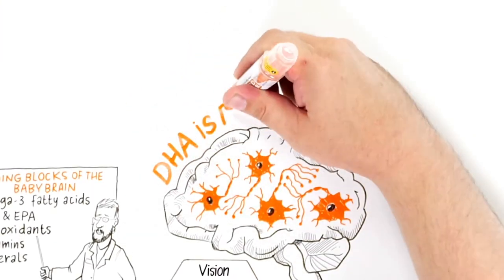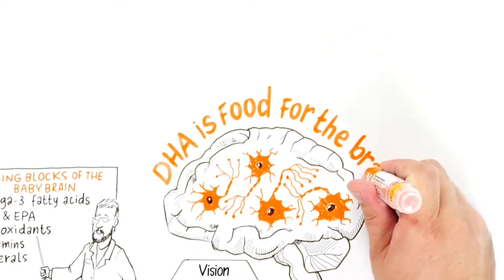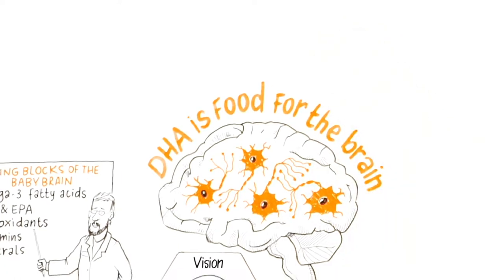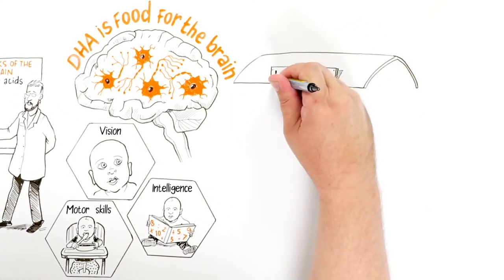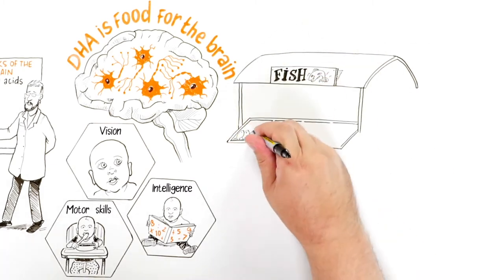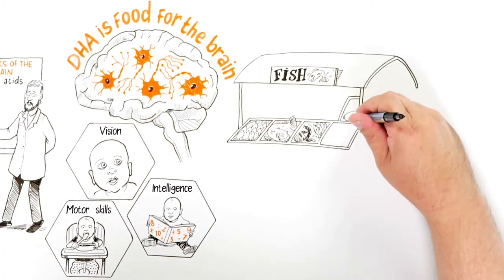So, it is important that you get this essential DHA into your system. And the easiest way to do this is by eating from a wide variety of oily fish and seafood at least twice a week.